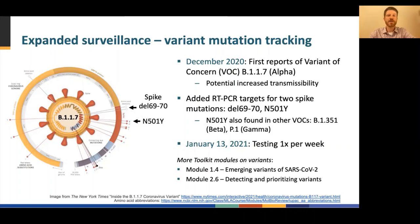Burlington's wastewater surveillance program was modified to include additional RT-PCR targets specific to two characteristic mutations in this variant: a deletion at position 6970 and an amino acid substitution at position 501. Wastewater samples collected from each of the treatment plants were tested for these additional targets once per week starting on January 13, 2021. It is important to note that these spike gene mutations are not specific to B.1.1.7 and therefore their detection by wastewater surveillance can only suggest, but not confirm, that the variant is circulating in the community. At the time, statewide capacity for genomic sequencing in Vermont was limited to approximately 16 clinical samples per week, meaning that wastewater surveillance was likely to detect mutations associated with the variant more quickly. These data could then be used to inform the selection of clinical specimens for sequencing to confirm the local circulation of B.1.1.7.